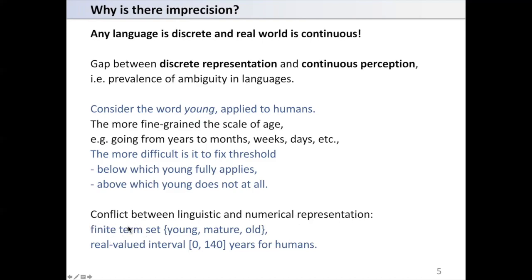We have finite terms in the set representing ages: young, mature, old. However, the age is in fact a real-valued interval, for example, between 0 and 140 years for humans.